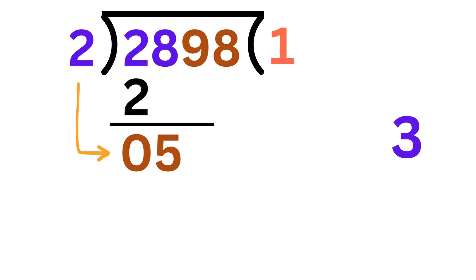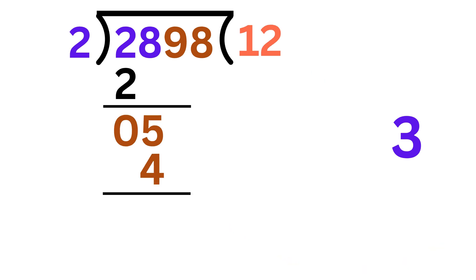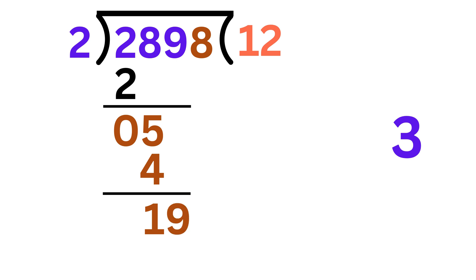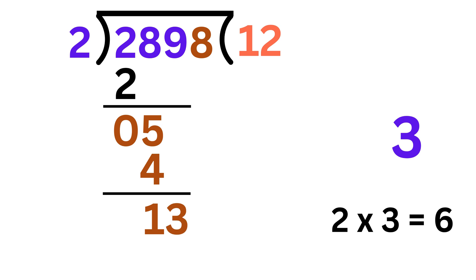Again, perform division. 2 times 2 is 4, so write 2 here and 4 here. Our remainder will be 1. Now bring this 9 here and this will become 19. Again, repeat the same process. Multiply this 2 with 3 to get 6. Now subtract this 6 from 19 to get 13.